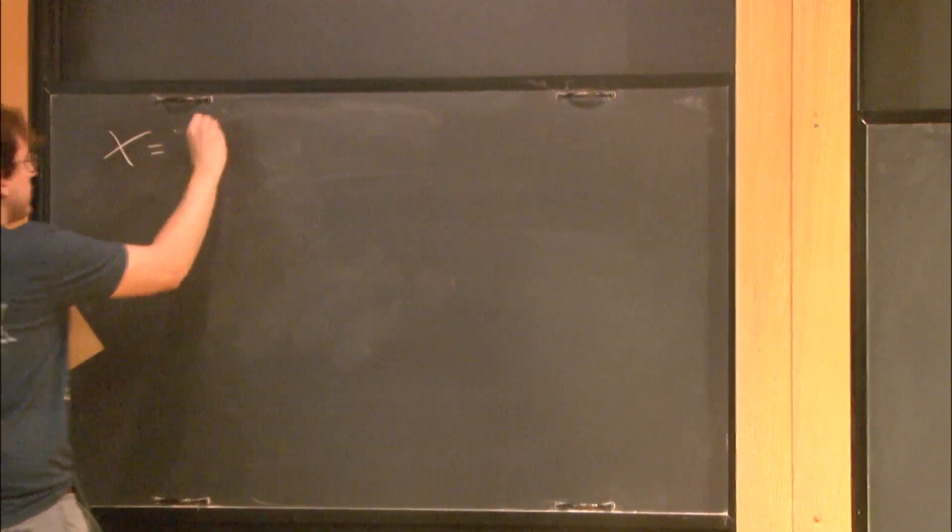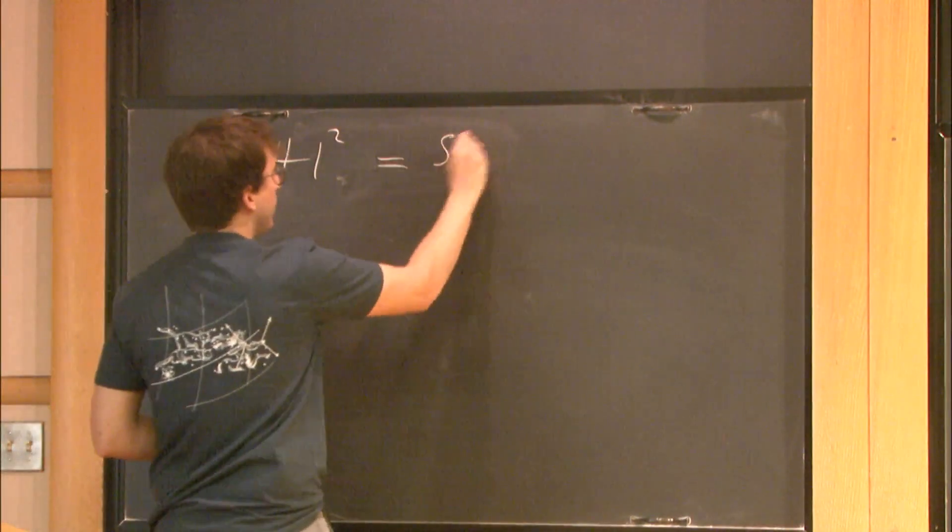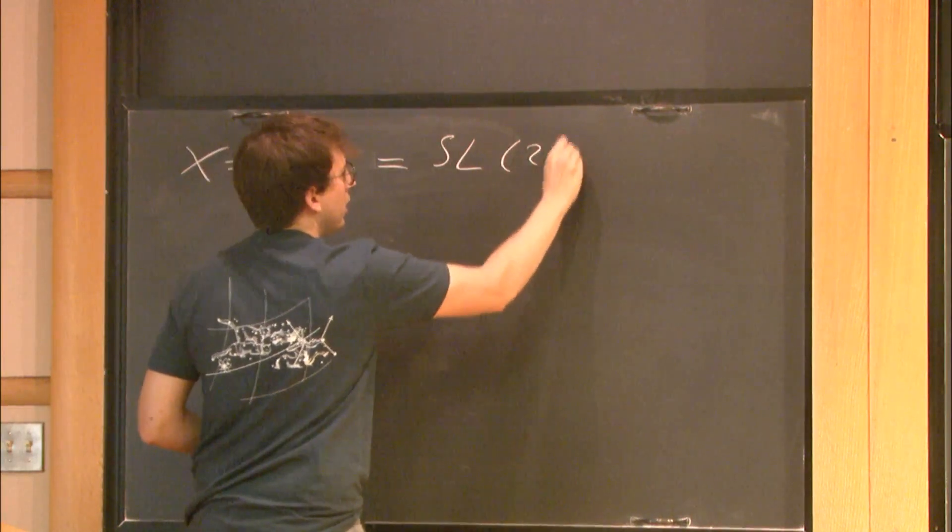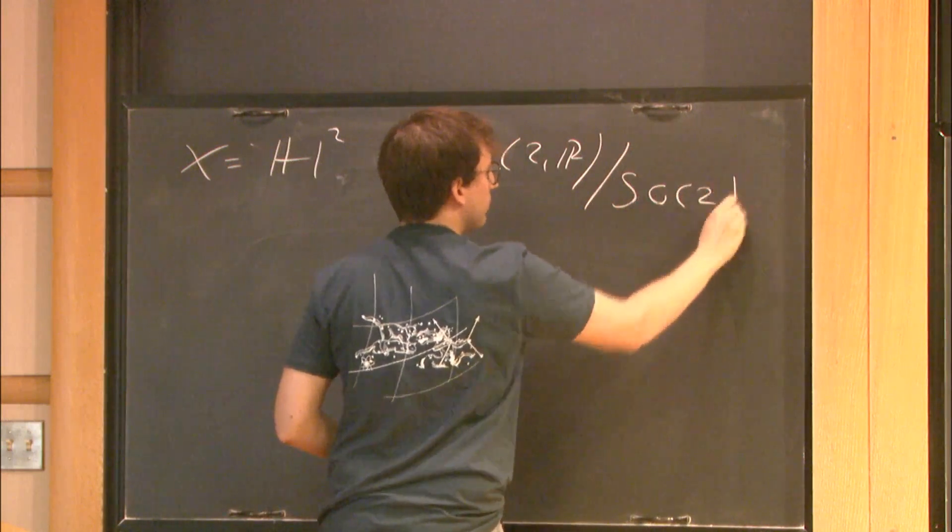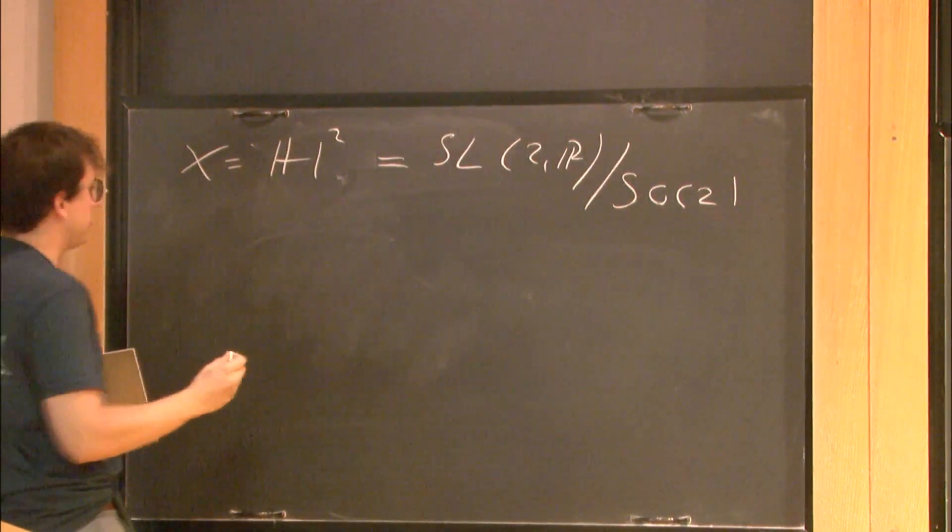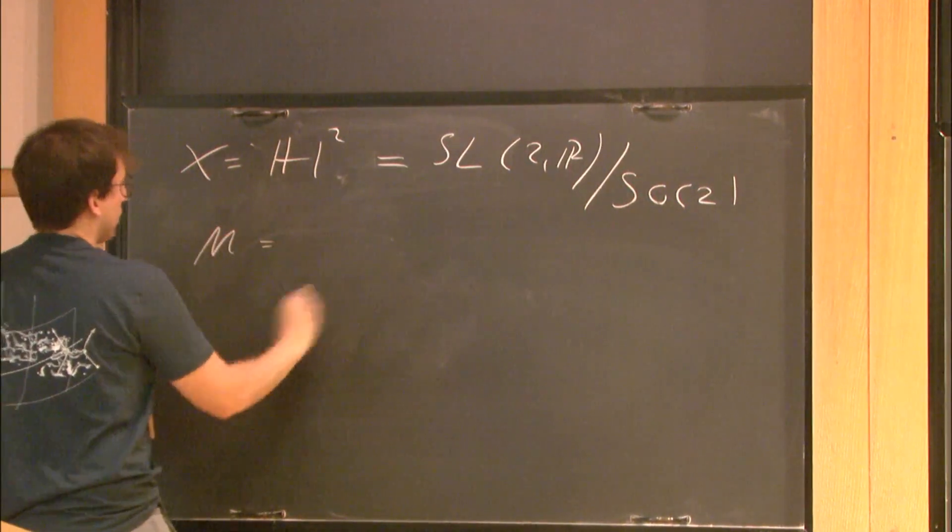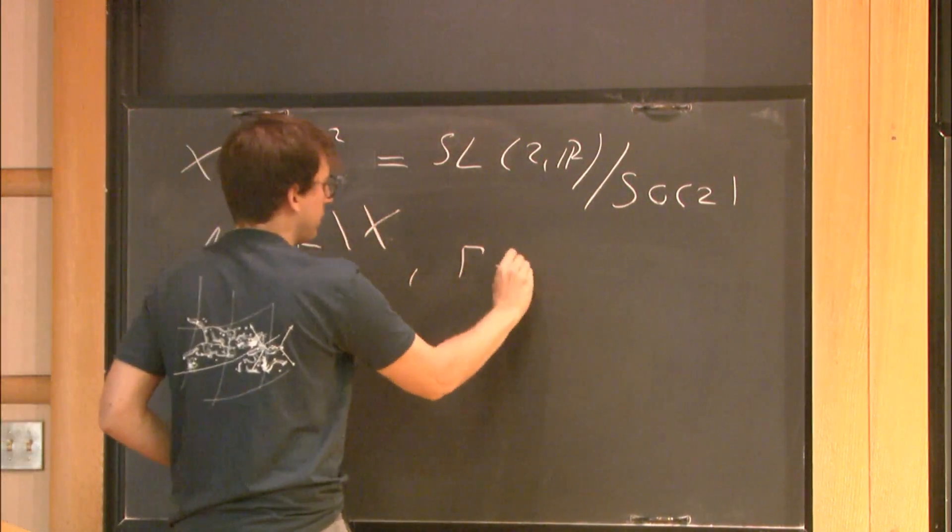I will start with a real simple example. So let's look at the symmetric space H2, the hyperbolic upper half plane. We will think of it as SL2R divided by the maximal compact subgroup SO2. And then we'll be looking at hyperbolic surfaces, manifolds of form X over gamma, where gamma is a lattice.